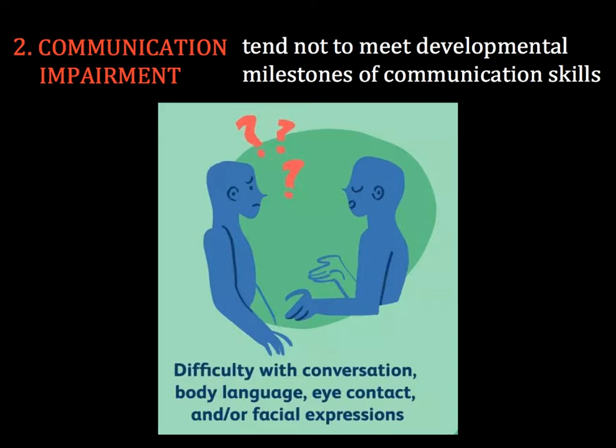Infants and toddlers with ASD often do not develop language skills at the same milestones as other children, and, depending on where they fall on the spectrum, might not develop the ability to communicate with spoken language at all. Additionally, people living with ASD often respond unusually when others show anger, distress, or affection. They tend not to read the social cues that others pick up naturally in early childhood and adolescence. This difficulty in communicating may lead to anxiety and depression, meaning an autism diagnosis can be an underlying cause for an anxiety or mood disorder.